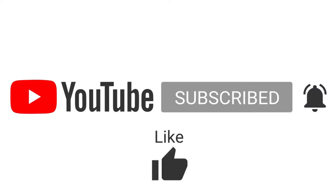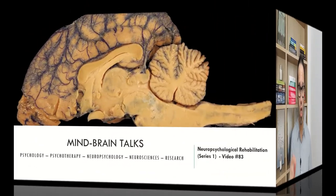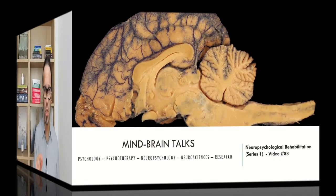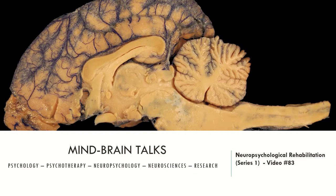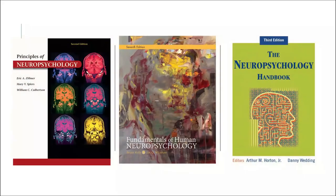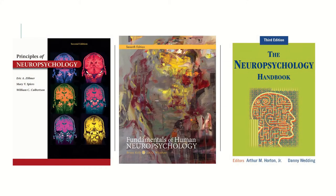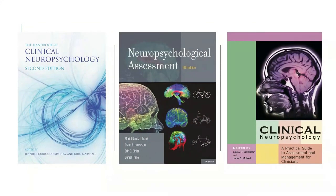Today let's talk about neuropsychological rehabilitation. I will describe the major issues that a clinical neuropsychologist must know to perform or develop a rehabilitation program focused on the specific needs and impairments of a specific patient. But first, let's see the manuals I recommend: the first is Principles of Neuropsychology, the second is Fundamentals of Human Neuropsychology, the third is Neuropsychology Handbook, the fourth is the Handbook of Clinical Neuropsychology, the fifth is the Neuropsychological Assessment, and the sixth is Clinical Neuropsychology.